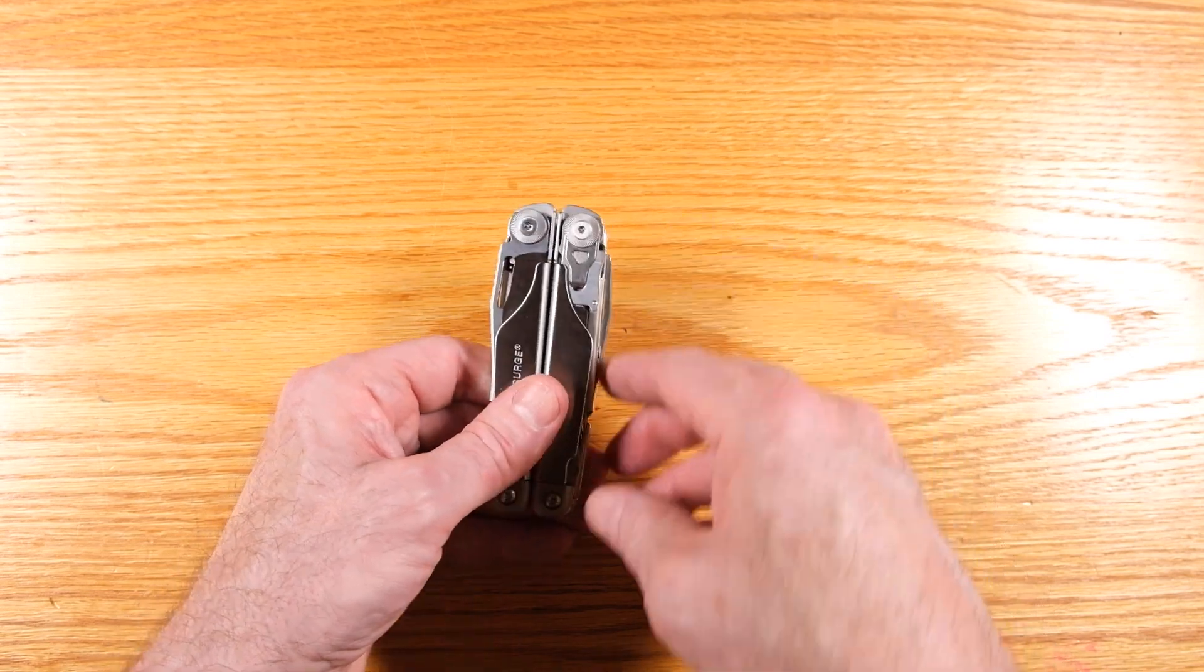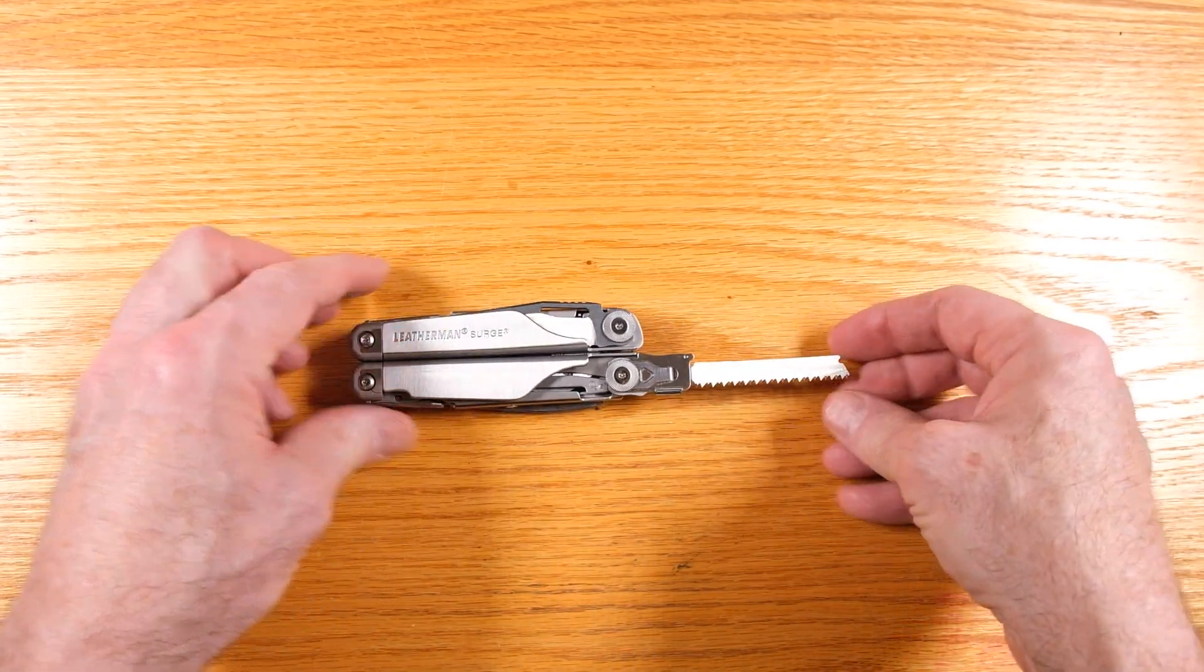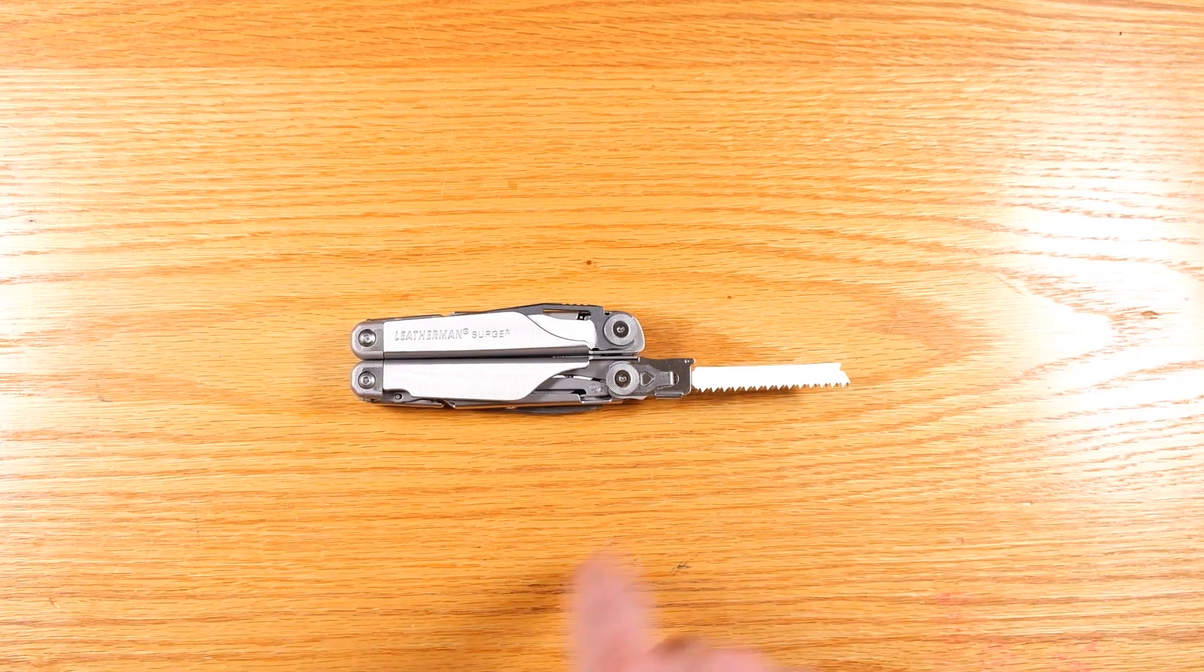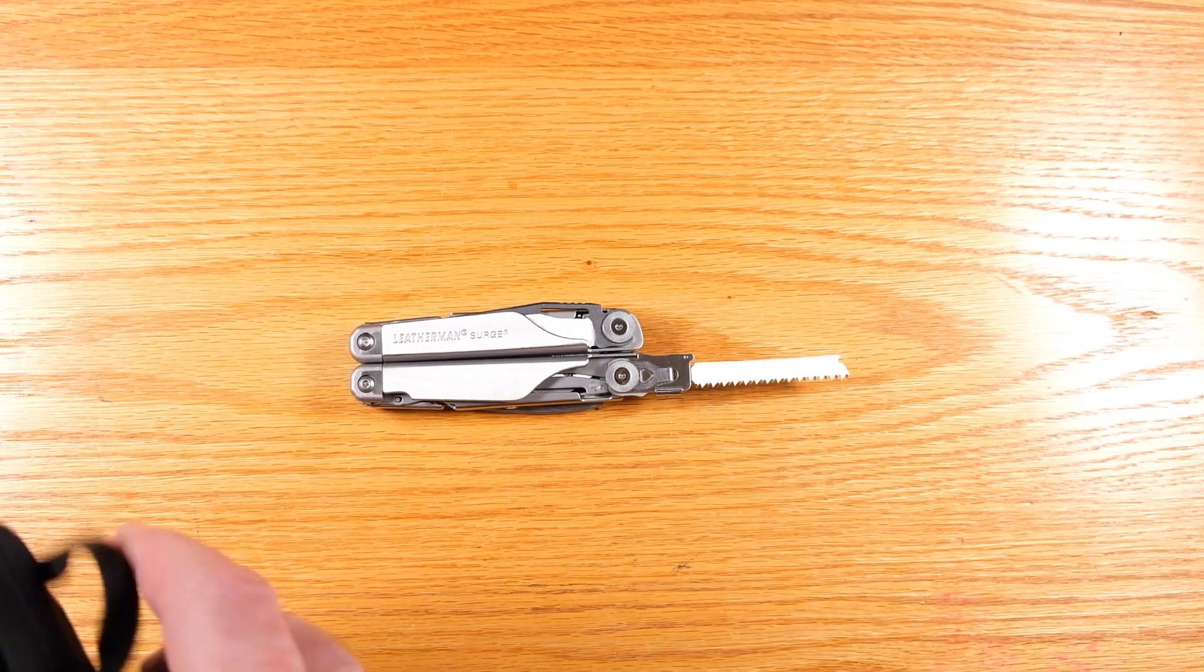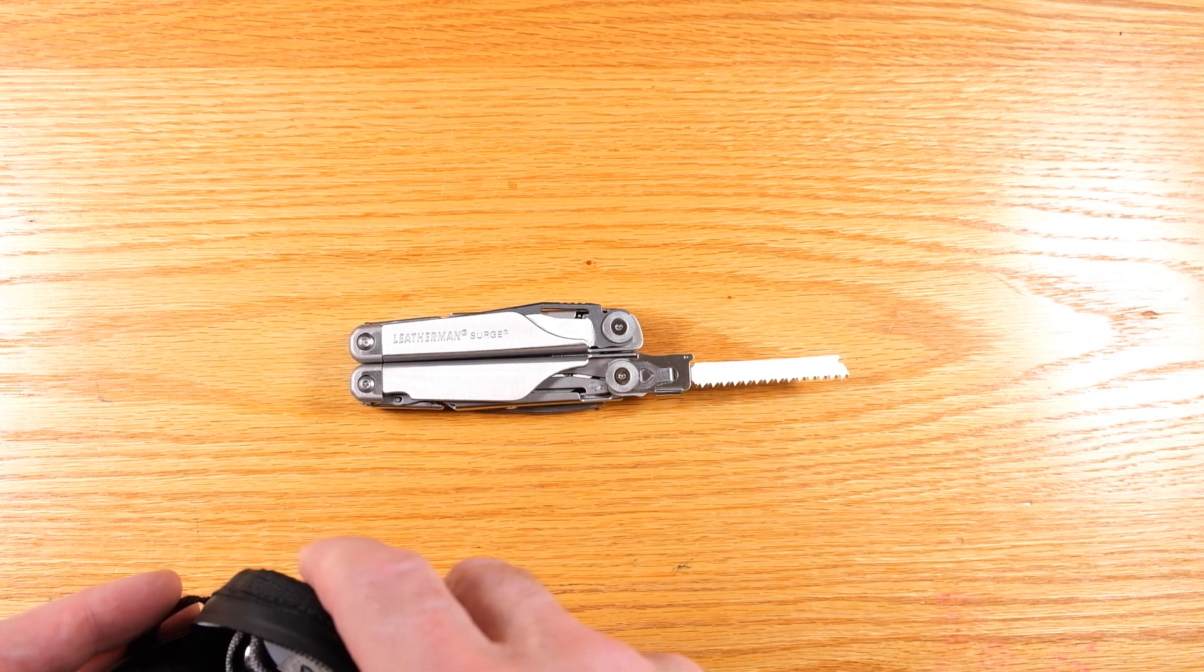And then one of the features I really love about this tool that's unique to it is this right here. So you can see there's a saw blade in there, but you can take this out. This base part comes apart.